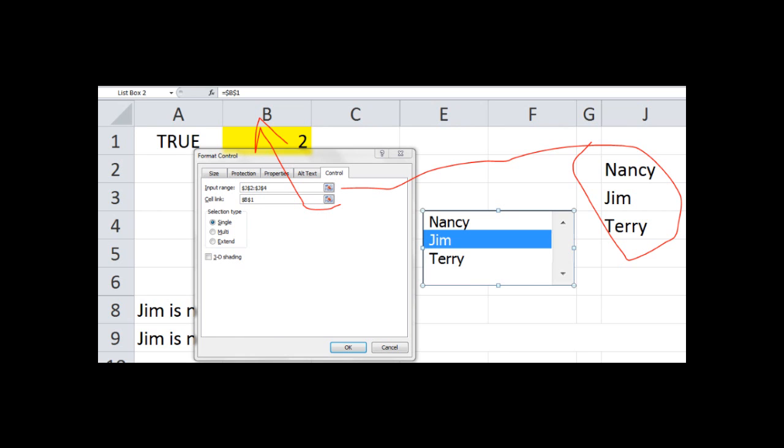The input range will be the names that I just called off, J2 through J4. Click on the icon to the far right of the input range field, then select cells J2 through J4. Then click the icon at the far right again so that it populates the input range automatically. You should see J2 through J4 in that box. Now we want a link cell. The link cell field, click on the icon to the right of that field and then click in cell B1. Once you do that, click on the icon at the far right again so that it populates the cell link with B1.